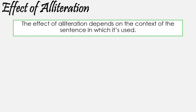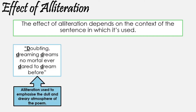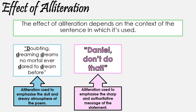So what's the effect of alliteration? Well, that all depends on the context in which it's used. The harsh D sound in The Raven is supposed to emphasize the dull and dreary atmosphere of the poem. However, in 'Daniel, don't do that,' the harsh D sound is supposed to seem sure, sharp, and authoritative, just like the nature of the statement — it's a warning. So there is no easy answer for the effect of alliteration. It all depends on the meaning of the words being used.